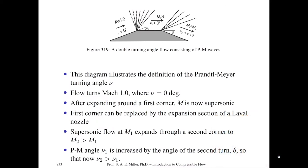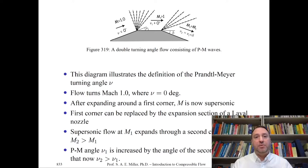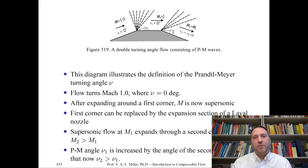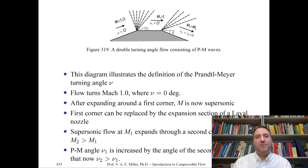Let's return to the Prandtl-Meyer expansion. In figure 319, I have shown a double expansion. The flow moves from left to right, and there are in fact two turns of the flow, which turn the flow out of itself. Expansion wave fans form at the corners where the flow is turned. Therefore, we have three regions — region 1, 2, and 3 — and two expansion fans attached to the corners, as shown here.